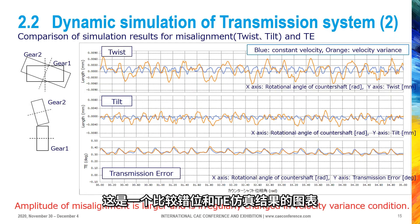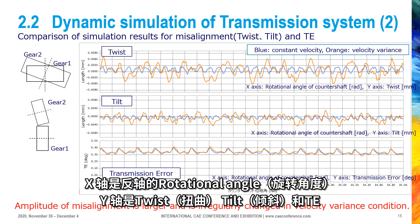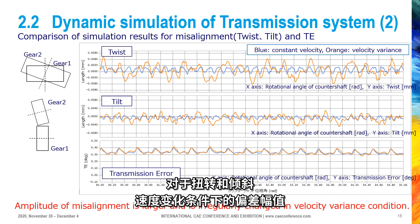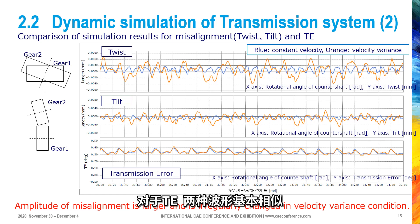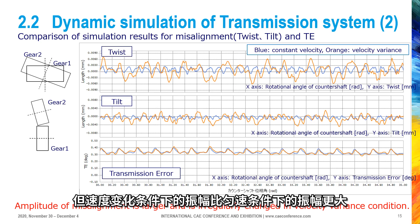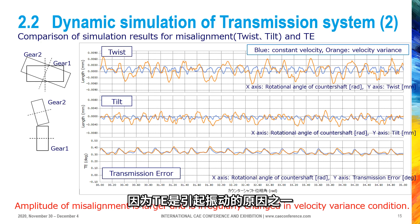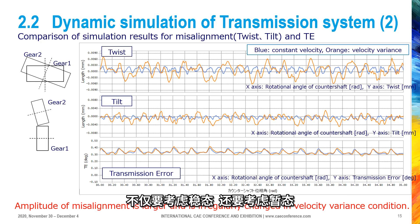A comparison graph of misalignment and transmission error (TE) is shown, where X-axis is rotational angle of counter shaft and Y-axis is twist, tilt, and TE. Regarding twist and tilt, amplitude of misalignment in the velocity variance condition is larger than that in the constant velocity condition and is irregularly varying. As for TE, the two waveforms are mostly similar, but amplitude in the velocity variance condition becomes partially larger than in the constant velocity condition. Because TE is one of the causes which excite vibration, not only steady state but also transient state should be considered when evaluating the NV problem of a transmission system.